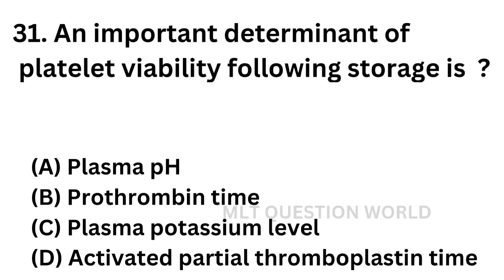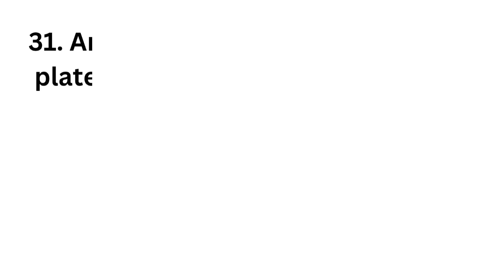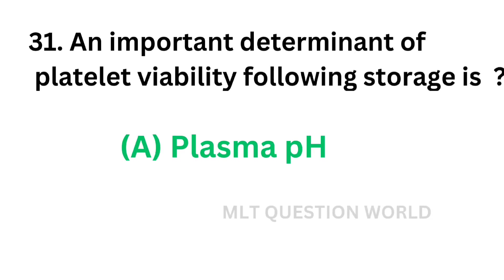Question No. 31. An important determinant of platelet viability following storage is: Option A: Plasma pH. Option B: Prothrombin time. Option C: Plasma potassium level. Option D: Activated partial thromboplastin time. The correct answer is Option A — plasma pH. Plasma pH is an important determinant of platelet viability following storage.